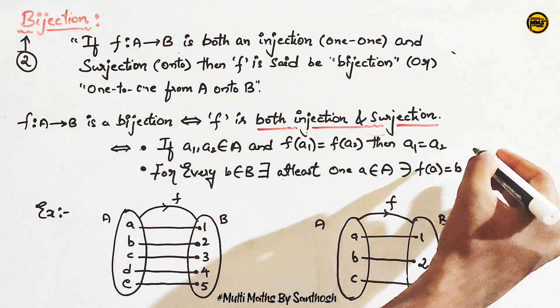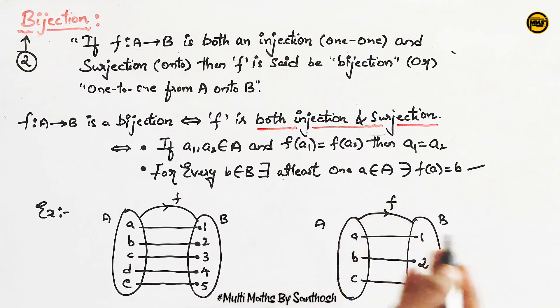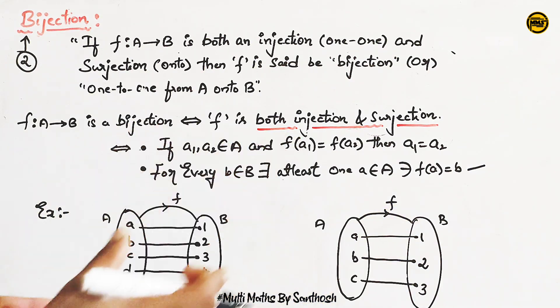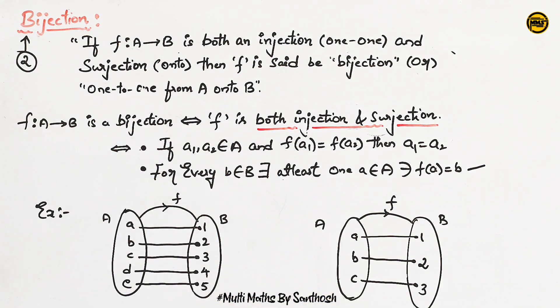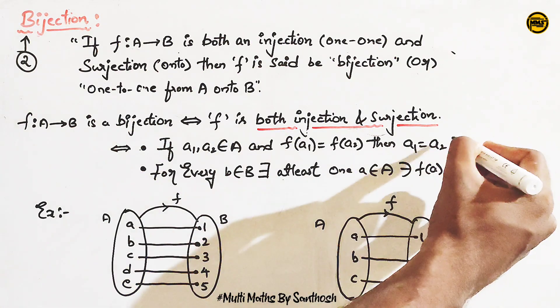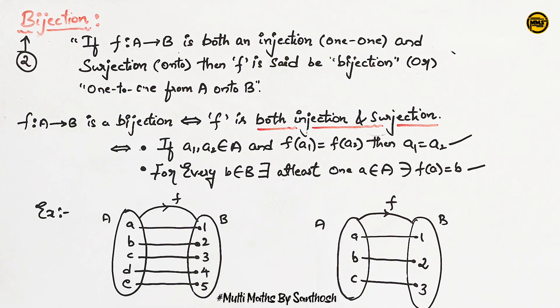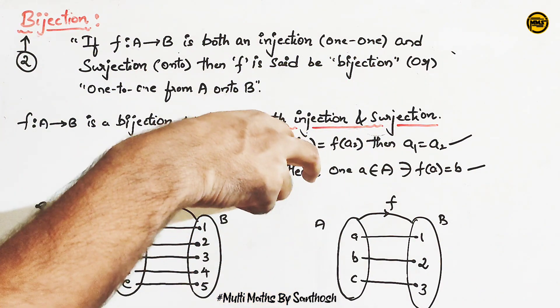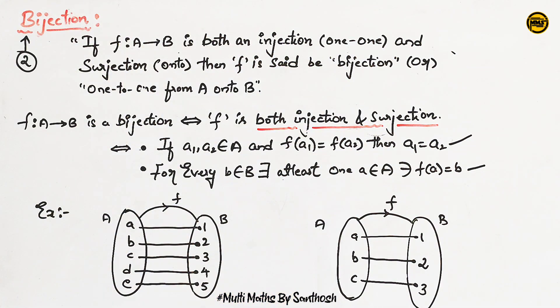If you are satisfied with both the conditions — different elements and different images, and range equal to codomain — that is the bijective function.